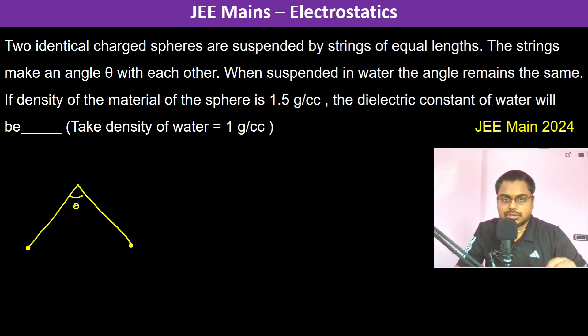The density of the material of the sphere. So now this is in water, and the angle is going to remain the same. The density of the material of the sphere is 1.5 grams per cubic centimeter.